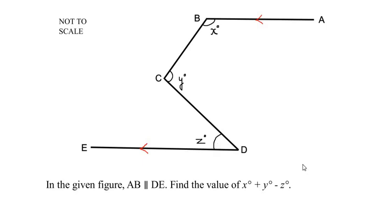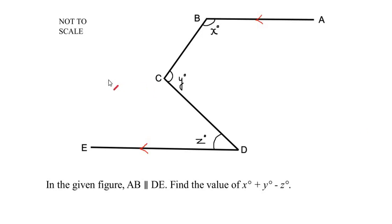At this moment, if you want to try it out yourself, you can pause the video. The given information is just that line AB is parallel to line DE. To understand and to get the value of the sum and subtraction of these angles, let me draw a straight line passing right through point C.